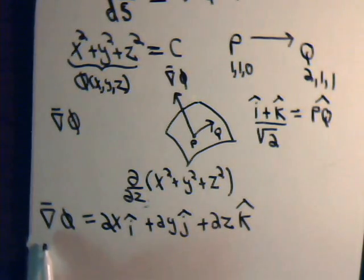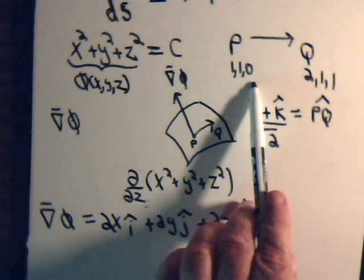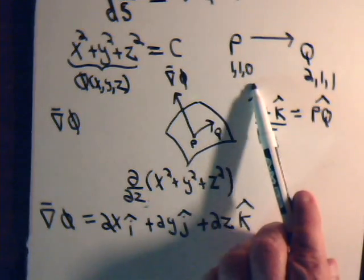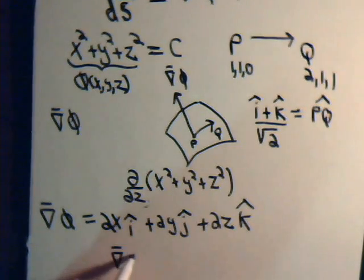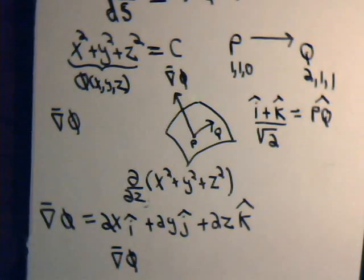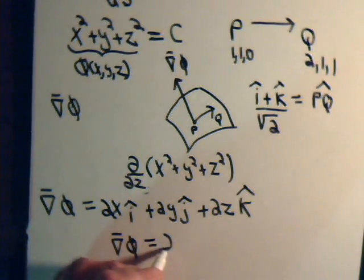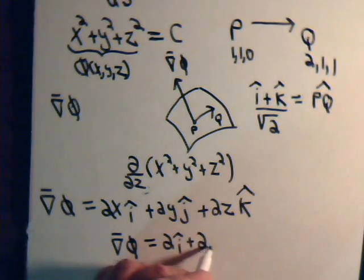And we want to evaluate this at the point p, 1, 1, 0. So x equals 1, y equals 1, z equals 0. So at that point the gradient is equal to 2i plus 2j.